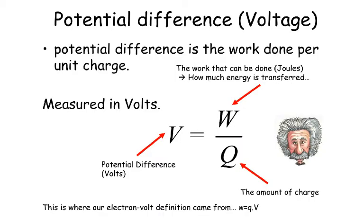Potential difference, also called voltage, is the work done per unit charge, measured in volts. The equation is V equals W over Q, where V is the potential difference in volts, W is the work done in joules or how much energy is transferred, and Q is the amount of charge. This is where our electron volt definition came from.